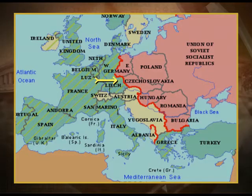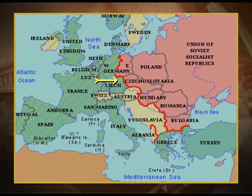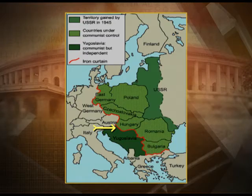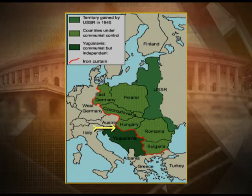A more detailed map shows the Iron Curtain running through the territory of Europe. Countries shown in pink are part of the Union of Soviet Socialist Republics or under its influence, while countries in green are part of the western alliance. The continent of Europe and the nations within it were divided between east and west.